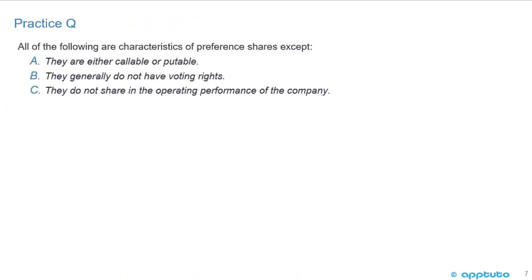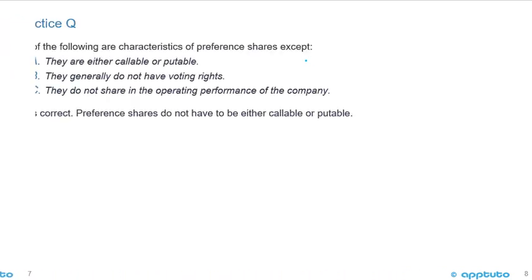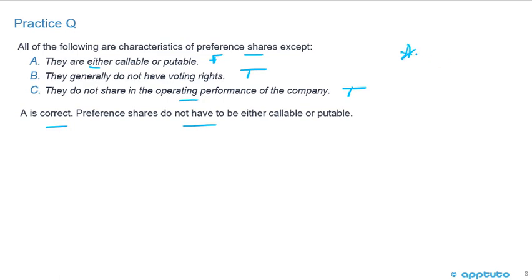We'll finish this LOS with two quick practice questions. All of the following are characteristics of preference shares EXCEPT: A, they are either callable or putable; B, they generally do not have voting rights; or C, they do not share in the operating performance of the company. Turning this into true or false: they generally do not have voting rights — true. They do not share in the operating performance of the company — true, unless they're participating preferred. They are either callable or putable — false. They could be, but it's not either/or. So A is correct. Preference shares do not have to be either callable or putable — that's a bit of a language word game.